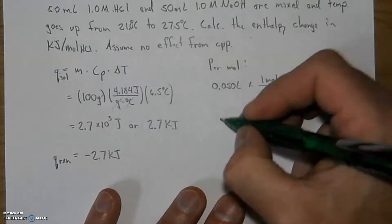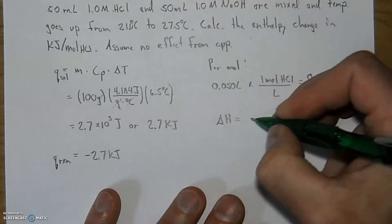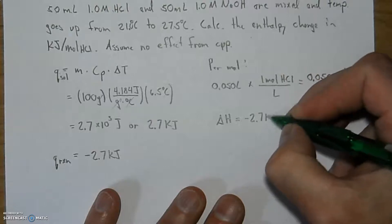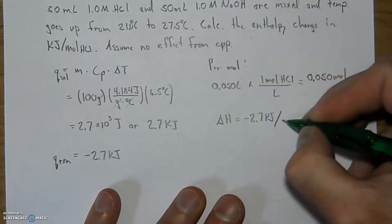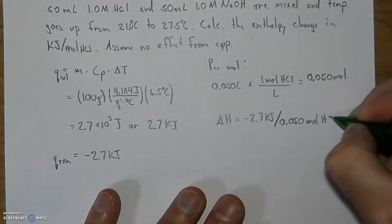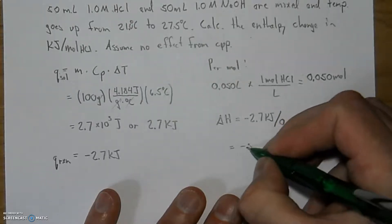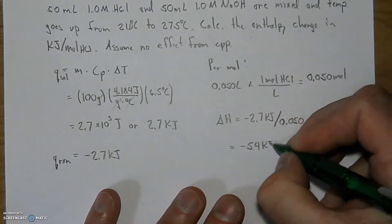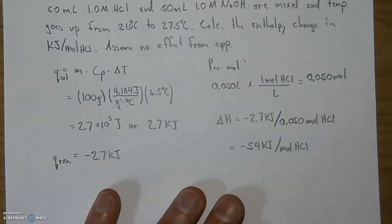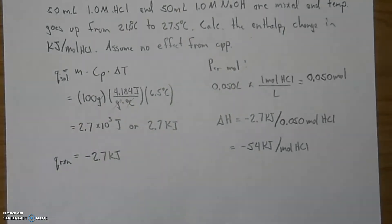And now that I have a number in moles, I can get the enthalpy change. The enthalpy change is negative 2.7 kilojoules per 0.050 moles of HCl, which gives me a final answer of negative 54 kilojoules per mole, every mole of HCl. And that is our final answer for that particular problem. Nice and easy, right? All right.